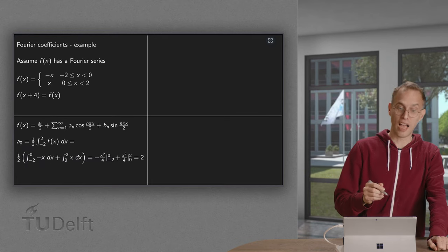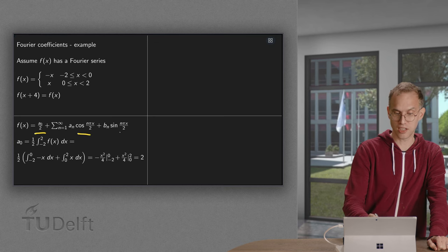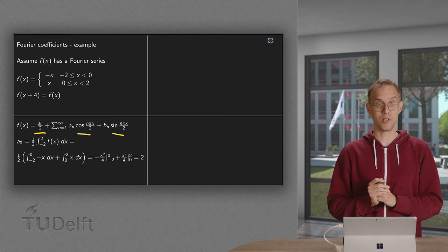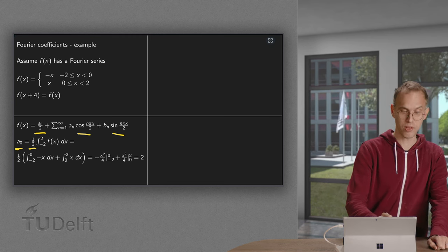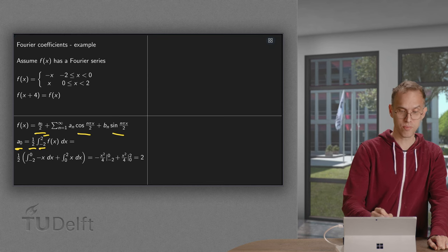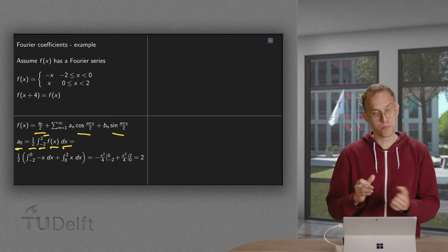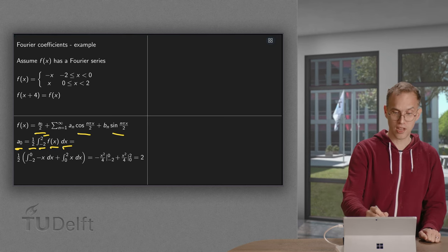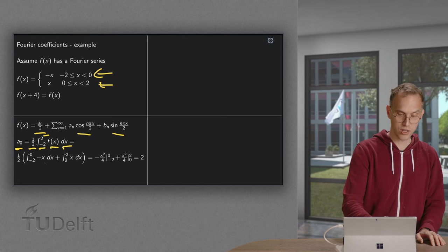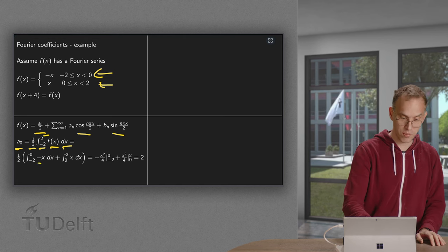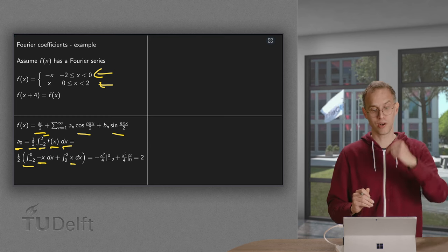Assume f has a Fourier series: a0 over 2, a sum over cosines and a sum over sines. We start with computing a0. a0 equals 1 over l, integrate from minus l to l, fx times 1 dx. We have to split this up into two parts because f equals minus x on the first part and x on the second part. So we integrate minus x between minus 2 and 0, and we integrate plus x between 0 and 2.